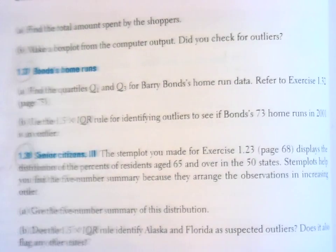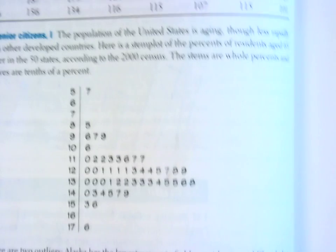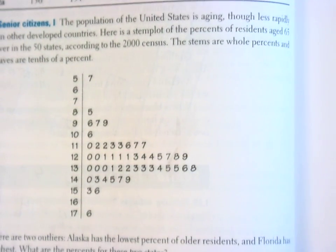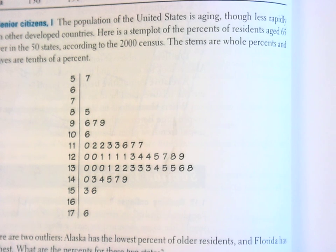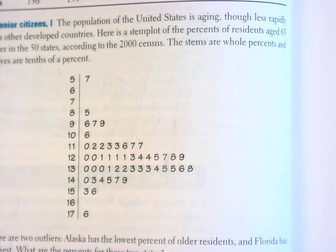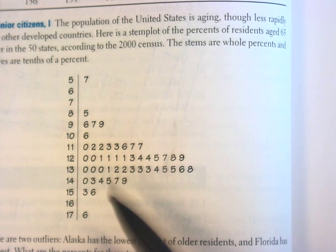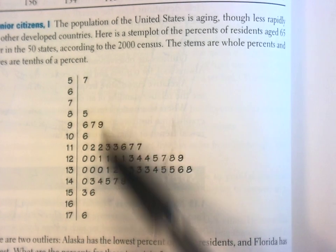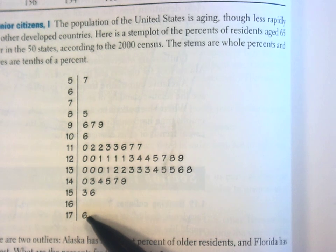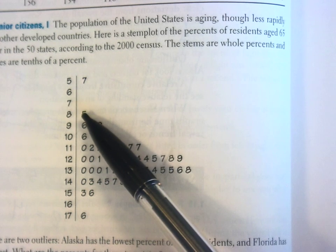If you go back to page 68 where that stem and leaf plot is, notice you don't have to take the time to put all of the data into your calculator and create a box and whisker plot or use one-variable stats to find the five-number summary. The leaves are in order, and there are 50 states, so it's easy to find the minimum and the maximum. To find the median, you just need to take the average of the 25th and 26th observation — you can count them.